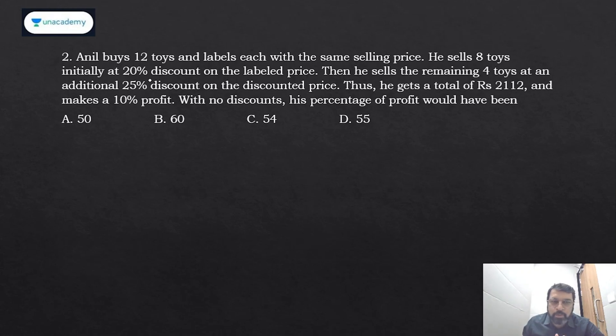So we have 12 toys with some selling price. 8 toys at a discount of 20%, so if you know the concept of multiplying factor—I'm focusing on that—8 toys with the marked price M are given 20% discount, so after 20% discount multiplying factor will be 0.8 or simply 4/5. This will be selling price.